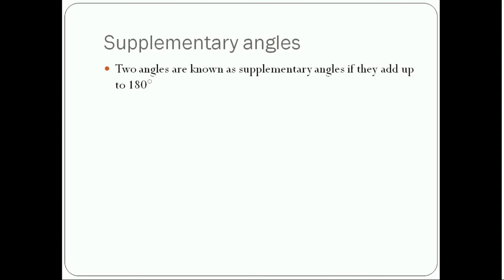Now supplementary angles: two angles are known as supplementary angles if they add up to 180 degrees. For example, 30 and 150 degrees — when we add 30 and 150 it makes 180, so 30 and 150 are supplement angles of each other. One more example: 62 and 118 degrees — when we add these two angles it will be 180 degrees, so 62 and 118 are supplement angles of each other.